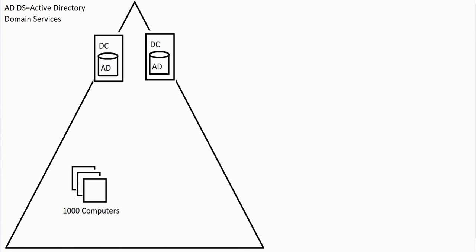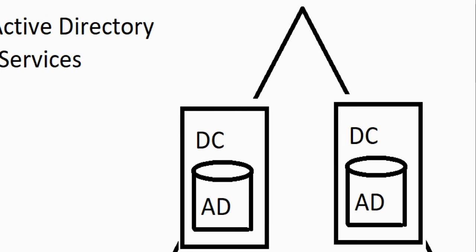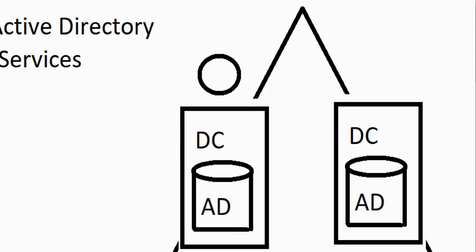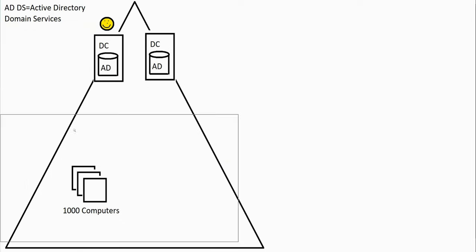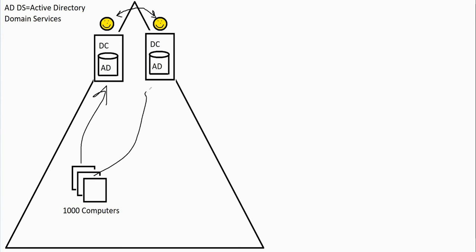Domain controllers replicate. So for example, if I create a user account on one domain controller, replication is going to occur and it will replicate over to the other. This means a user could log on to any machine and it's going to authenticate with the domain controller, because the user account exists on all of them.